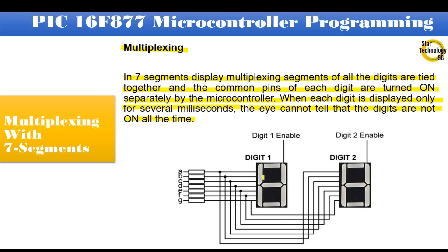You can see in the figure. Here is digit 1 and here is digit 2. All segments of digit 1 are tied with digit 2 segments — segment A, segment B, segment C, segment D, segment E, segment F, segment G — and the common pin of each digit is turned on separately by the microcontroller.